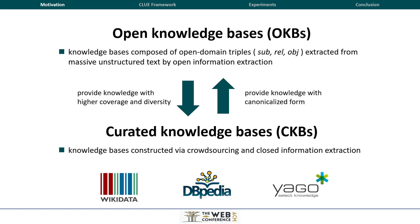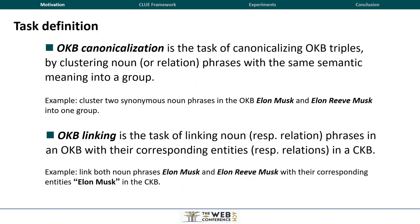To enable better knowledge integration between OKBs and CKBs, two vital tasks are proposed: OKB canonicalization and OKB linking. OKB canonicalization is the task of canonicalizing OKB triples by clustering non-canonical phrases with the same semantic meaning into a group. OKB linking is the task of linking non-canonical phrases in an OKB with their corresponding entities in a CKB. Here are two corresponding examples of these two tasks.